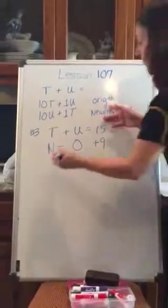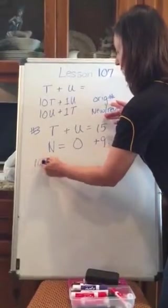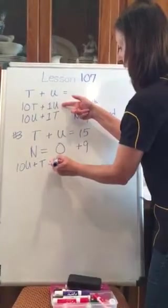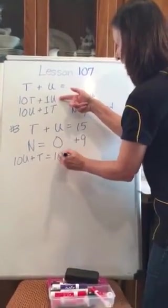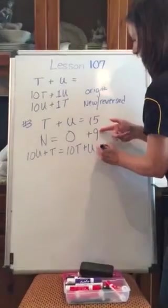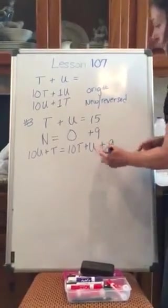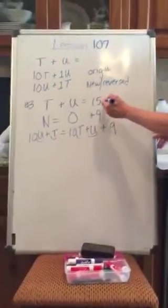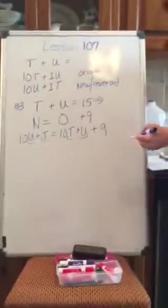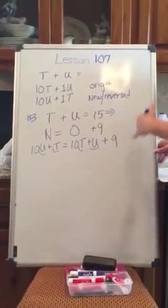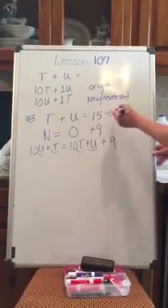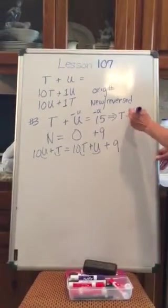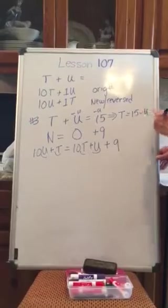So what do I have? The new number is 10 times the units plus 1 times the tens. The original is 10 times the tens number plus 1 times the units, and it's 9 greater. So I'm always going to have units and tens, two variables. I'm always going to go back to this first equation. Solve for tens or units and substitute in.